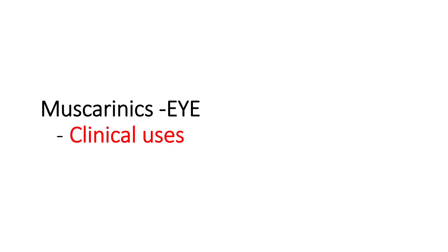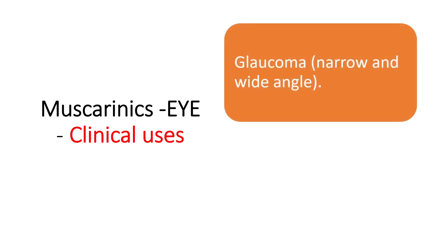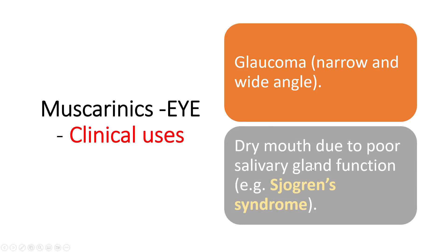Clinical uses of muscarinic receptor agonists include treatment of glaucoma — both narrow and wide angle — by decreasing intraocular pressure through increased aqueous humor drainage due to widening of the iridocorneal angle. They are also useful in dry mouth due to poor salivary gland function, since M3 receptor activation increases glandular activity. One such condition is Sjögren's syndrome.